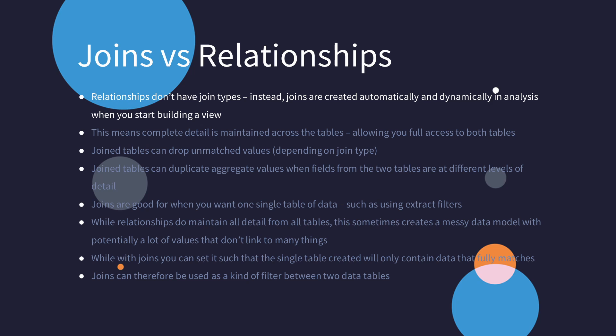Now we've seen joins on the physical layer and related tables on the logical layer. We've seen how there are different join types and some of the benefits of relationships. Consider that relationships don't have join types. Instead, when using a relationship, joins are created dynamically in analysis, fitting the needs of the view you are creating. This means that full detail of the tables is always maintained when using relationships — no loss of data.